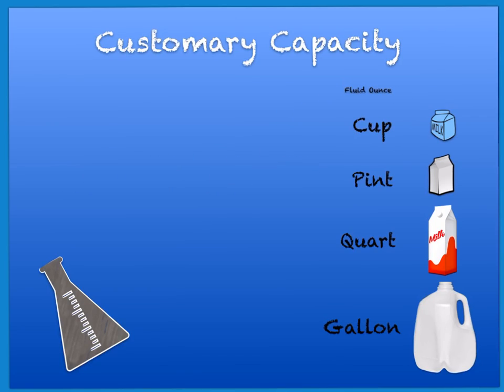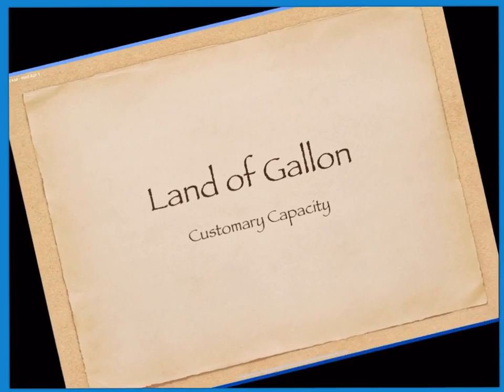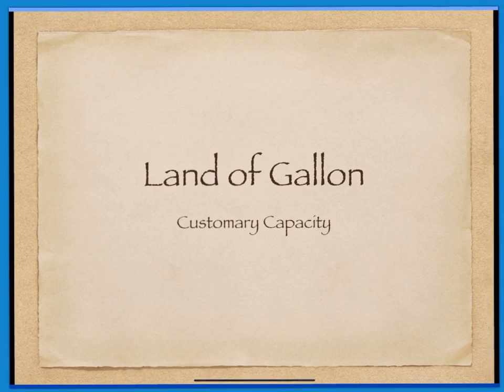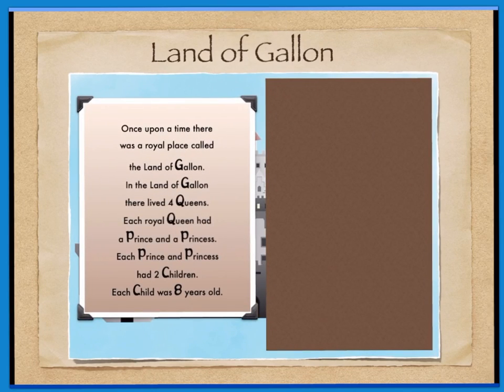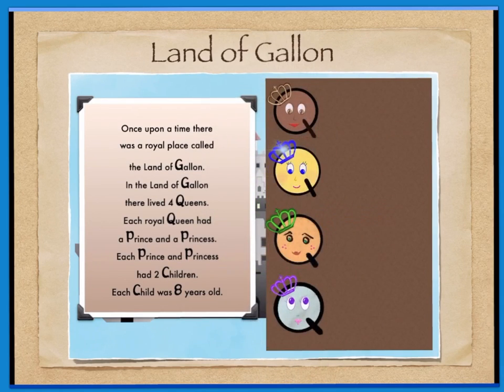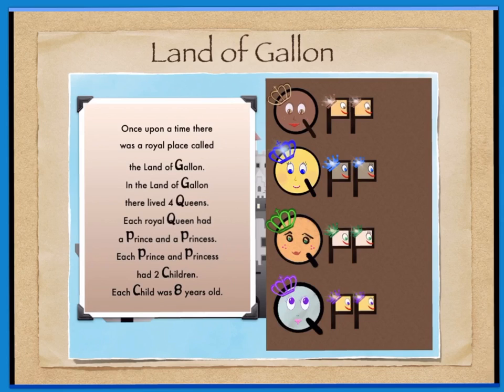Having a difficult time remembering all of these? I may have a solution for you. Welcome to the Land of Gallon. Once upon a time, there was a royal place called the Land of Gallon. In the Land of Gallon, there lived four queens. Each royal queen had a prince and a princess. Each prince and princess had two children, and each child was eight years old.